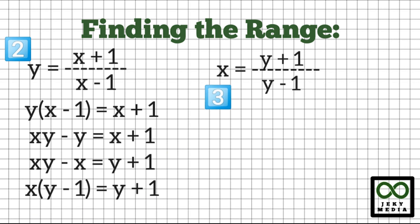Step 3: Replace x by y and all y by x to get the inverse of the rational function. This becomes y equal to (x plus 1) over (x minus 1).